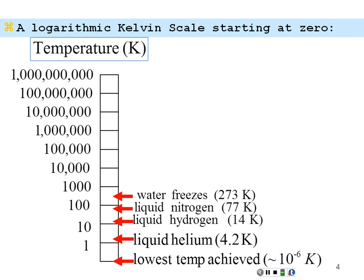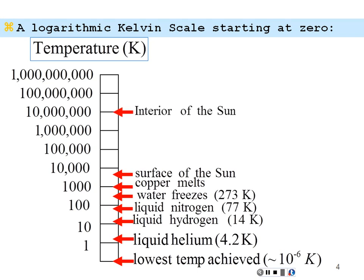Water freezes at 273 degrees Kelvin, which gives us the correction between the centigrade and Kelvin scales. Copper melts somewhere around 1,000 degrees Kelvin. The surface of the sun is 6,000 degrees Kelvin, which also happens to be about the temperature of the middle of the Earth. The very interior of the sun, where fusion takes place, is on the order of 10 million degrees Kelvin — you need those temperatures to bring nuclei together for fusion. A hydrogen bomb reaches around 100 million degrees Kelvin, recreating the conditions of the interior of the sun. That tells you the challenges of trying to use fusion as a method of energy production.